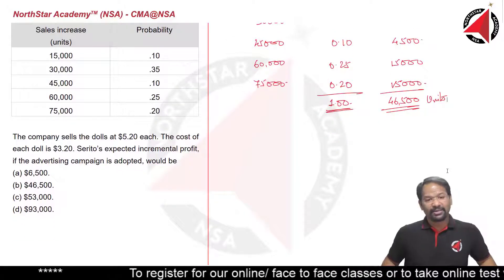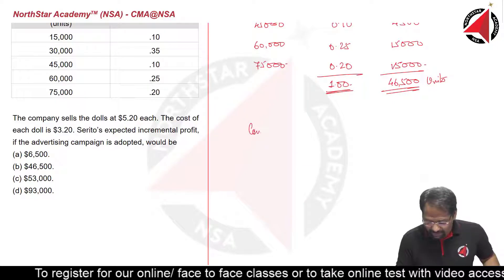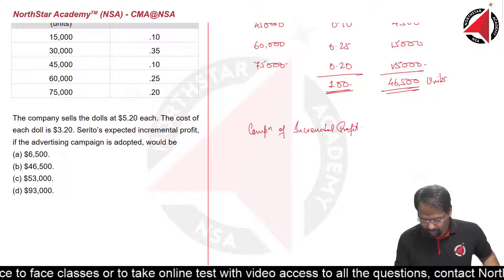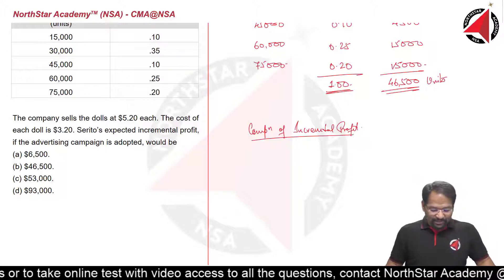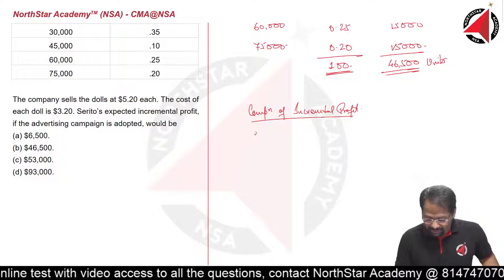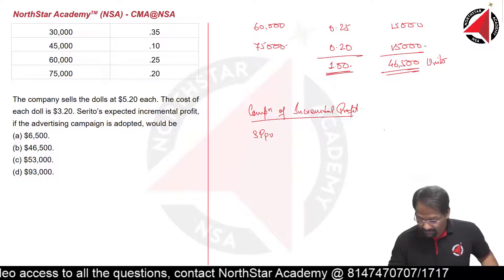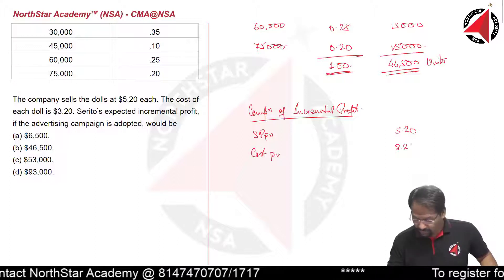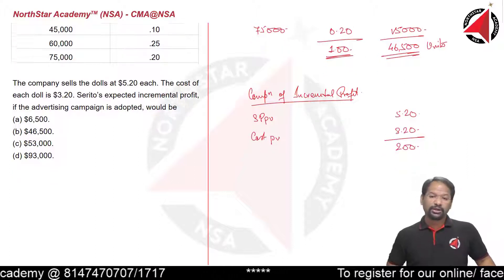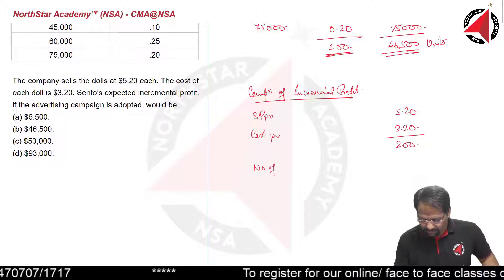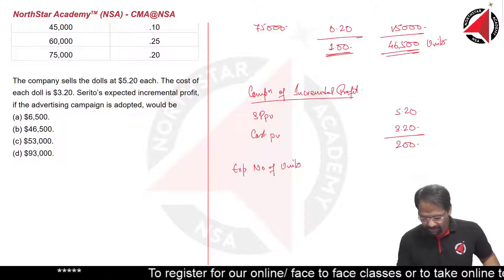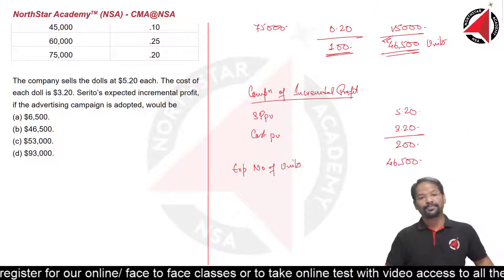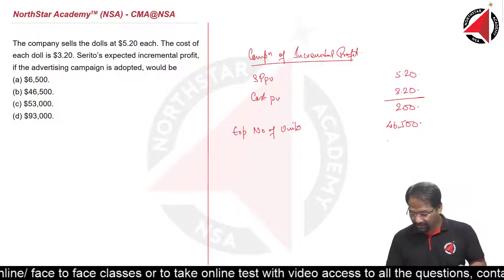Now let's compute the incremental profit. The selling price per unit is $5.20 and the cost per unit is $3.20, giving a contribution margin of $2.00 per unit. Multiplying $2.00 by the expected number of units of 46,500 gives us $93,000.